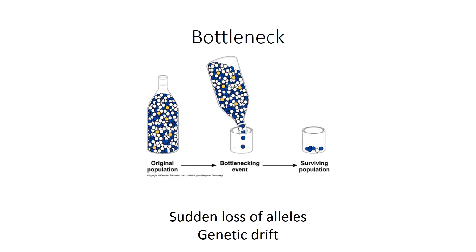With a bottleneck, you've got a large population that for whatever reason gets really small very quickly — that is what we call a bottleneck. The surviving population is a small representation of the once-larger population, and as a result of randomly sampling part of the larger population, you have a loss of alleles, which can lead to genetic drift.